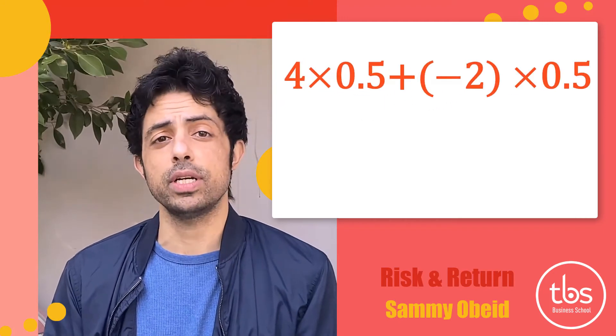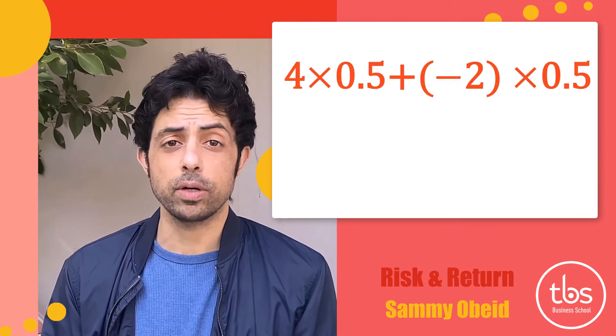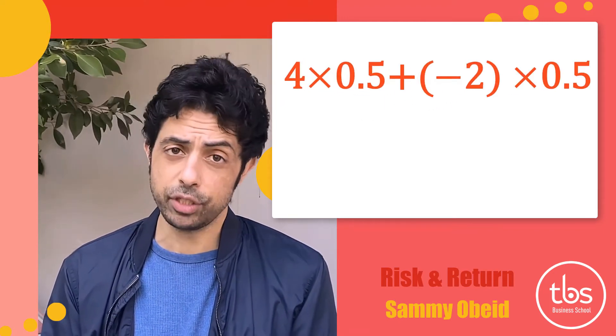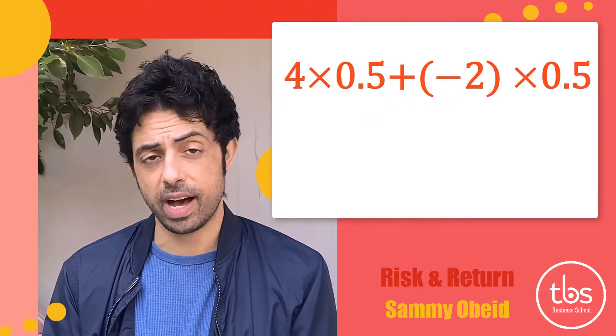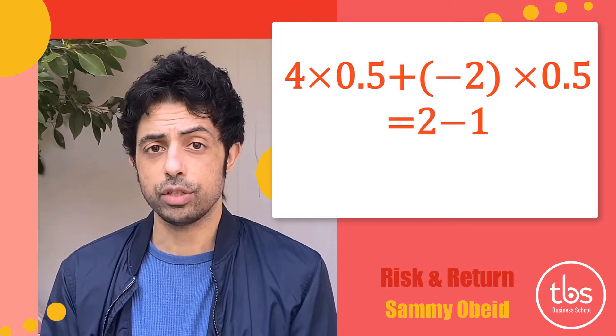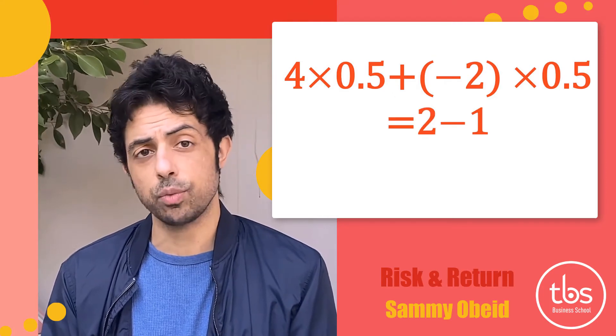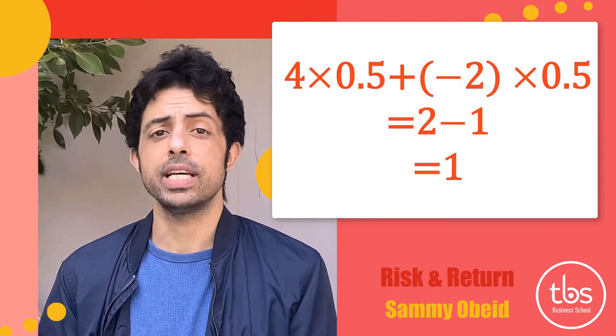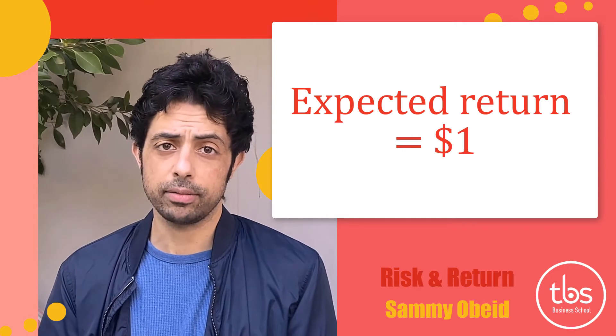So the expected return is 4 times 0.5 plus negative 2 times 0.5, which is 2 minus 1, which is 1. So the expected return of this investment is $1.